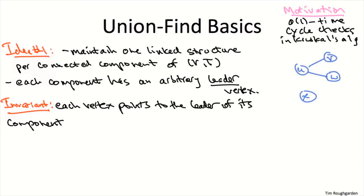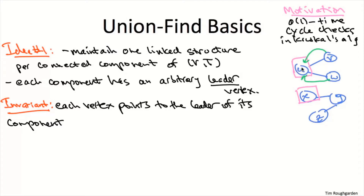For example, maybe we have two different connected components with three vertices each — one containing vertices u, v, and w, another containing vertices x, y, and z. Any of these three vertices could be the leader of each component. So perhaps u happens to be the leader of the first component and x happens to be the leader of the second. The invariant says every vertex should point to the leader of its component: v and w point to u, u points to itself, x points to itself, y points to x, and z also points to x.